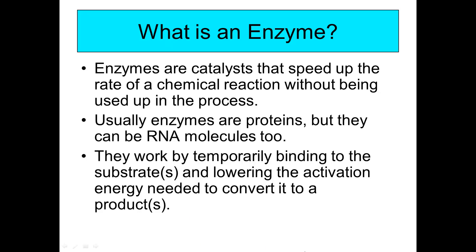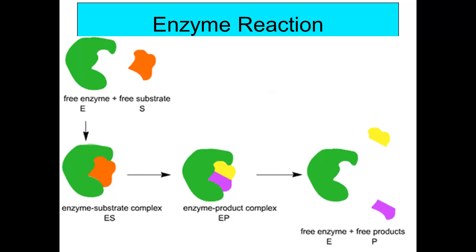Enzymes also work by binding individual substrates and converting them into a single product. In this diagram you can see the first method where you have a free enzyme and a free substrate, then the enzyme-substrate complex forms (ES), then the enzyme-product complex forms (EP), and then the free products are released and the enzyme is recycled to bind again to substrates.